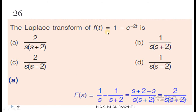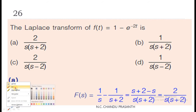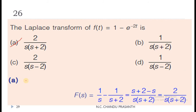Question 26: The Laplace transform of F(T) = 1 − e^(−2T). Applying the Laplace transform: L{1} = 1/S and L{e^(−2T)} = 1/(S+2). On cross-multiplication, we get 2 / [S(S+2)]. So option A is the correct answer.